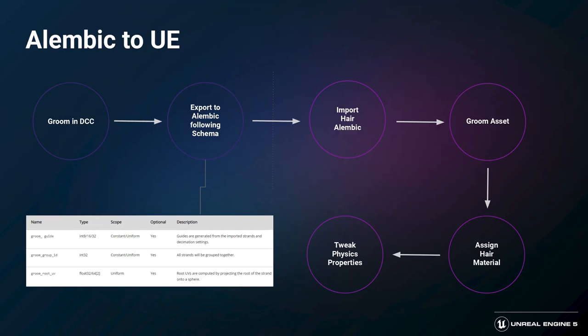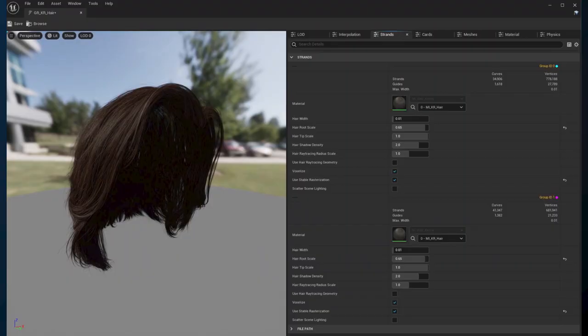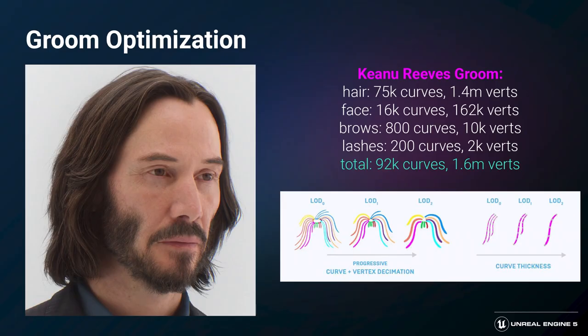The importer looks for attributes and groups that follow specific naming conventions to transfer information such as hair width, grouping, and defining guide hairs for simulation. Once imported, the groom is represented by a groom asset. The groom asset editor is the home of all things hair-related — here you can define LODs including card and mesh-based LODs, assign materials, and adjust physics parameters. In film VFX, grooms typically use real-world densities and widths. When working in real-time, we start with real-world densities but apply optimizations like decreasing strand and vertex count while increasing strand width to compensate, applied more aggressively to lower LODs.